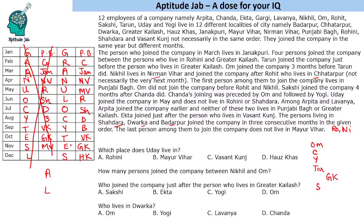Now let's answer the questions. First: which place does Uday live in? Uday lives in Mayur Bihar. Second: how many persons joined the company between Nikhil and Om? Nikhil joined here and Om joined here — two persons joined in between. Third: who joined just after the person who lives in Greater Kailash? Sakshi joined just after that person. Fourth: who lives in Dwarka? Chanda lives in Dwarka.